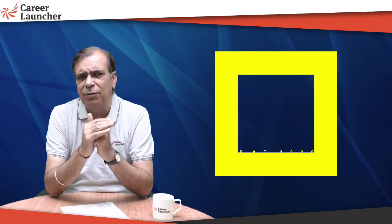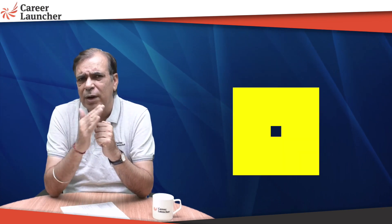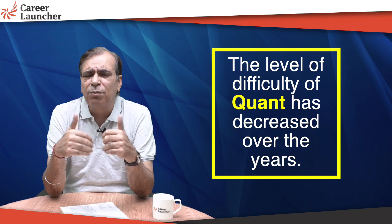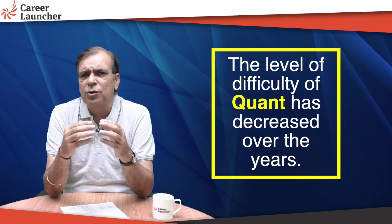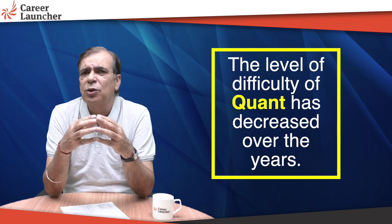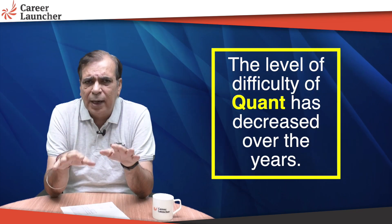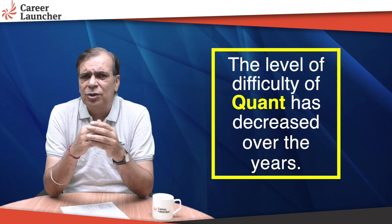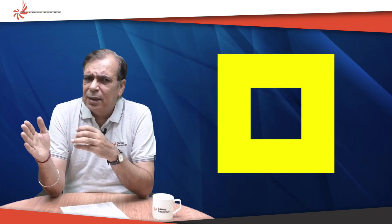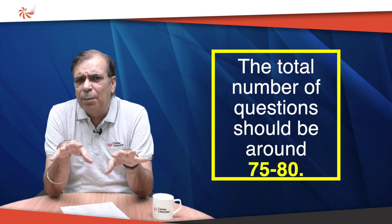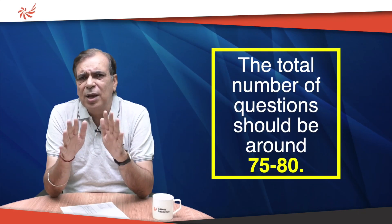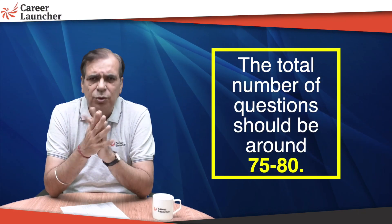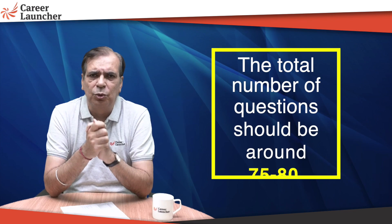There is a pattern if you look at the last 4-5 years of papers — progressively the level of difficulty of maths was decreasing and the number of questions was coming down, so that students get more time and are not in a rush. Over the last couple of years the number of questions has stabilized to around 75 to 80 questions, and that is what should happen this year too.